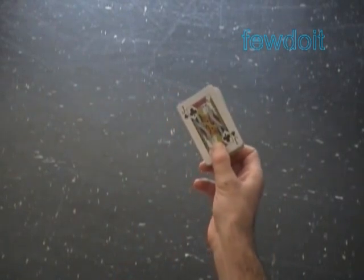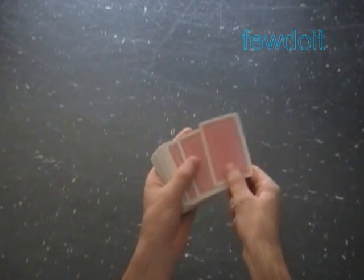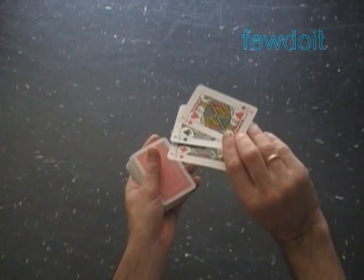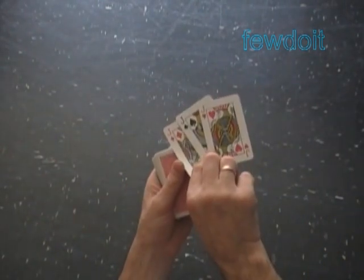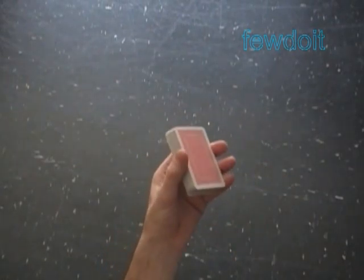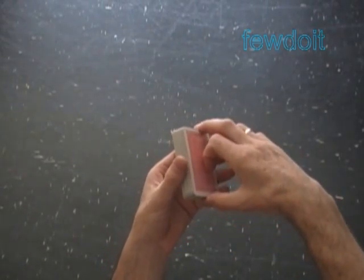Your audience believes at this point that you put all four jacks in different places. In reality you have moved only one jack to the bottom of the deck, and the three jacks you keep on the top of the deck. Obviously it's your secret. You should not explain this during performance.